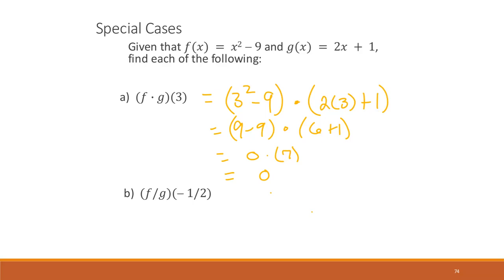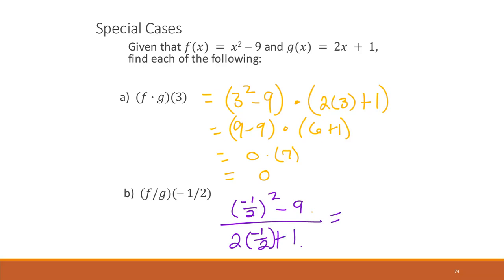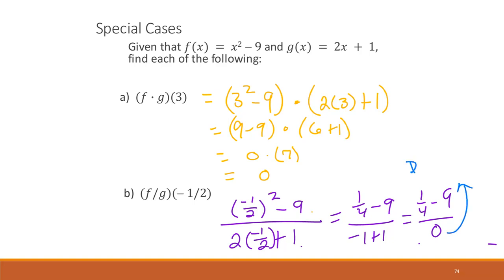Here's another special case. We evaluate at x = −1/2: (−1/2)² − 9 over 2(−1/2) + 1, which gives (1/4 − 9) over (−1 + 1). The denominator equals 0, and since division by 0 is undefined, this problem has no solution — the answer is undefined.